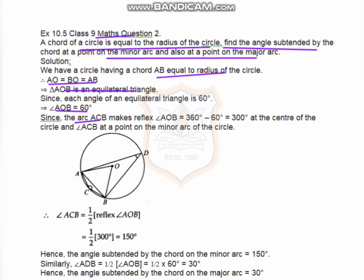First of all, reflex angle AOB equals 360 minus 60 which equals 300 degrees. Angle ACB at the point on the minor arc equals half of the reflex angle, which is half of 300, equals 150 degrees.